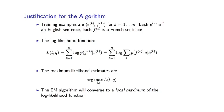As we said, the training samples are eK, fK pairs for k equals 1 to n. And we can define something called the log-likelihood function, which is a function of our t-parameters and our q-parameters.